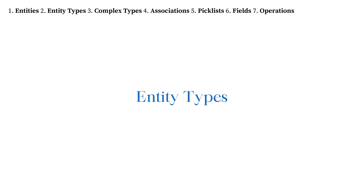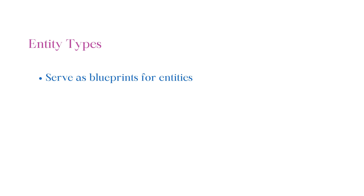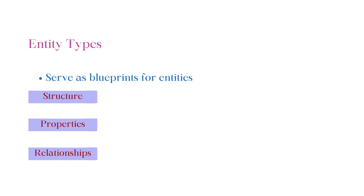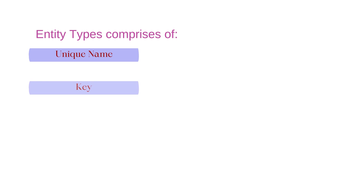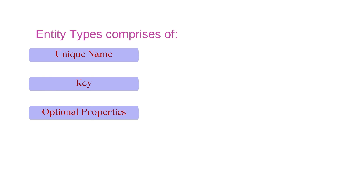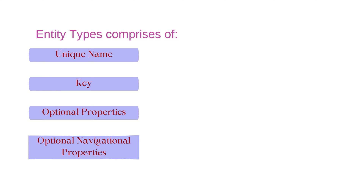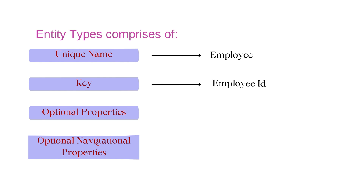The next data model object is Entity Types. Basically, entity types are blueprints for entities. They define their structure, properties, and relationships. Entity types typically comprise a unique name, a key, optional properties, and optional navigation properties. For example, a unique name can be 'Employee', which is an entity type. A key can be employee ID, which uniquely identifies that entity type.